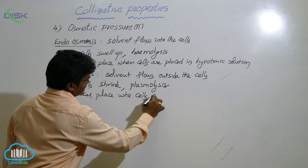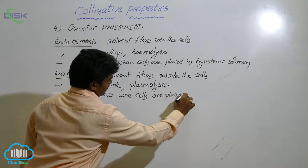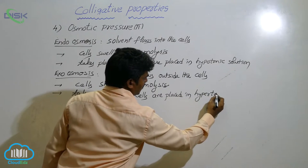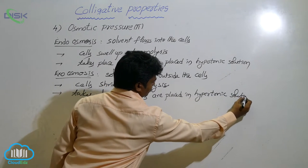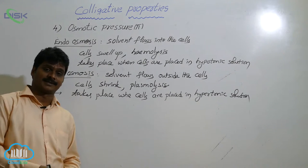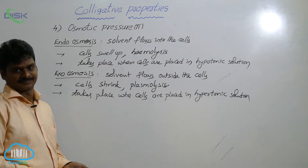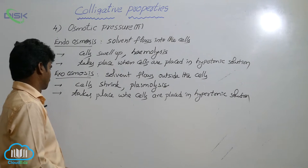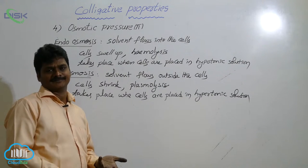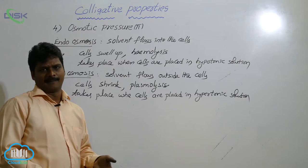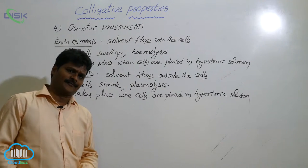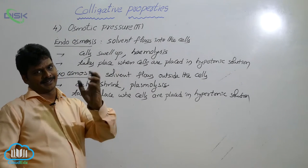Exosmosis takes place when cells are placed in a hypertonic solution. For example, place some grapes in highly concentrated salt water. After 2-3 hours, there occurs a shrinkage of the grapes. Salt solution is high concentration; inside the grapes is low concentration.